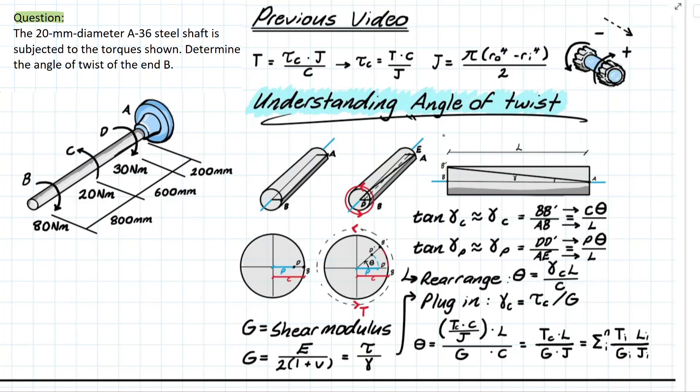Basically we're going to use the same member that we analyzed previously from our previous video except now we're going to use it to explain what the angle of twist actually is. So let's imagine that we have a member and we're assuming that it's going to be fixed at one end with the torque being applied at the other.